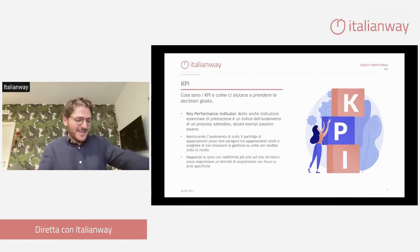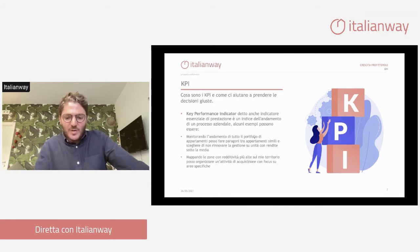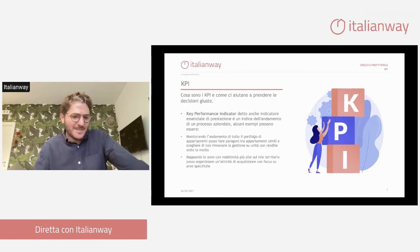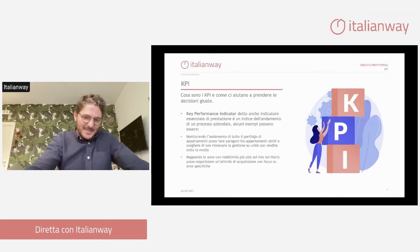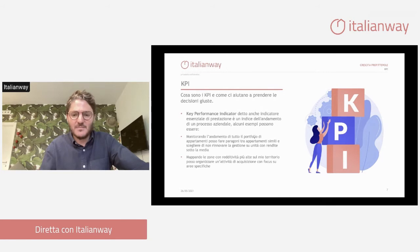Un altro esempio è mappare le nostre zone, capire su quali territori ha più senso crescere per creare degli utili. So che ci sono zone con redditività più alta e zone con redditività più bassa, per cui posso organizzare dei focus su aree specifiche. Ad esempio a Roma, la casa vacanze in Piazza Navona ha un fatturato diverso da una nella zona Spagna, da una sull'Aventino, da una a Trastevere. Il KPI del valore lordo di produzione è importante per prendere scelte sul dove e come crescere.